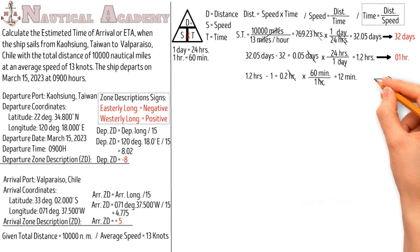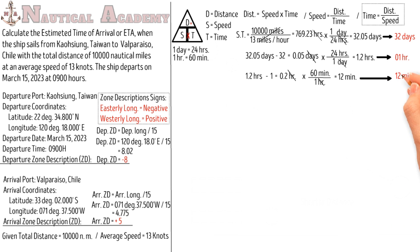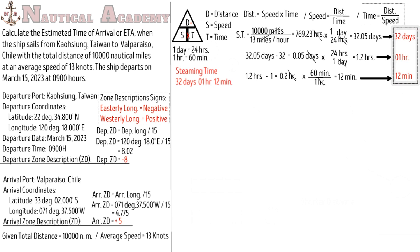So the steaming time, or the duration of the voyage from Kaohsiung, Taiwan to Valparaiso, Chile, with a total distance of 10,000 nautical miles at an average speed of 13 knots, is 32 days, 1 hour, and 12 minutes.